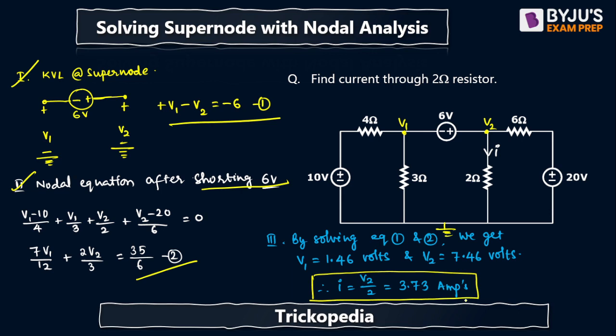Substituting v2 value I have got 3.73 amps. So this is the procedure generally we do if you want to get the current value by supernode procedure. It will take at least one and a half minutes.